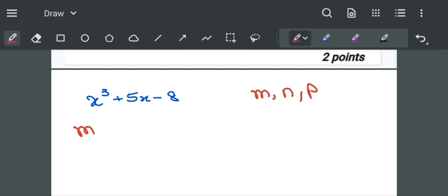So the sum of roots of the equation m plus n plus p is equal to minus b by a, which is equal to 0 because the coefficient of x square, b, is equal to 0.